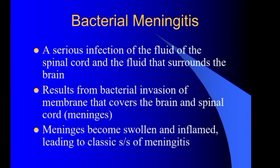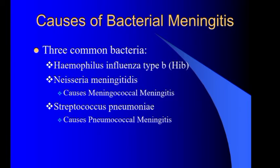The second type of etiology is bacterial meningitis. It is a serious infection of the fluid of the spinal cord that surrounds the brain. The main difference from viral meningitis is that it results from bacterial invasion of the membranes that cover the brain and spinal cord, causing the meninges to become swollen and inflamed. Inflammatory mediators cause swelling and inflammation of the meninges, which include the arachnoid, pia mater, and dura mater.